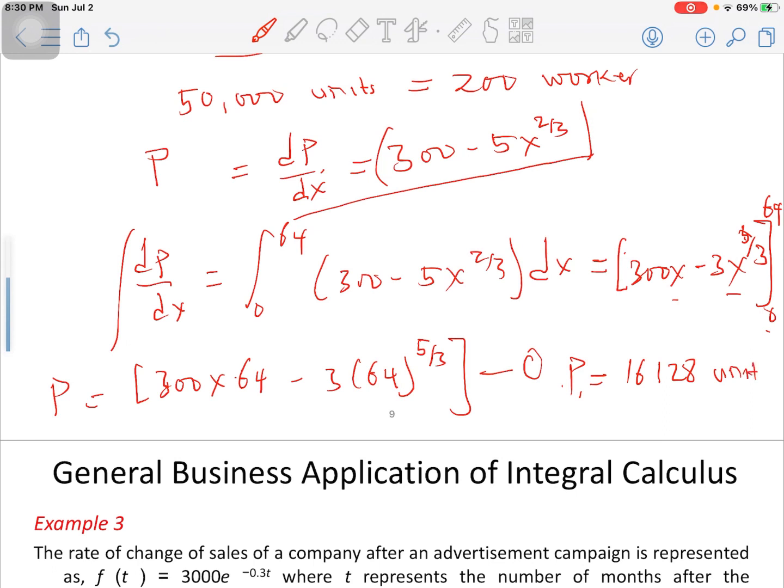Let's see something here. The total number of additional units produced is going to be 16,128. So the total number of units produced by these 264 workers is going to be the existing 50,000 that the company can produce a week with 200 workers, plus the 64 additional workers.